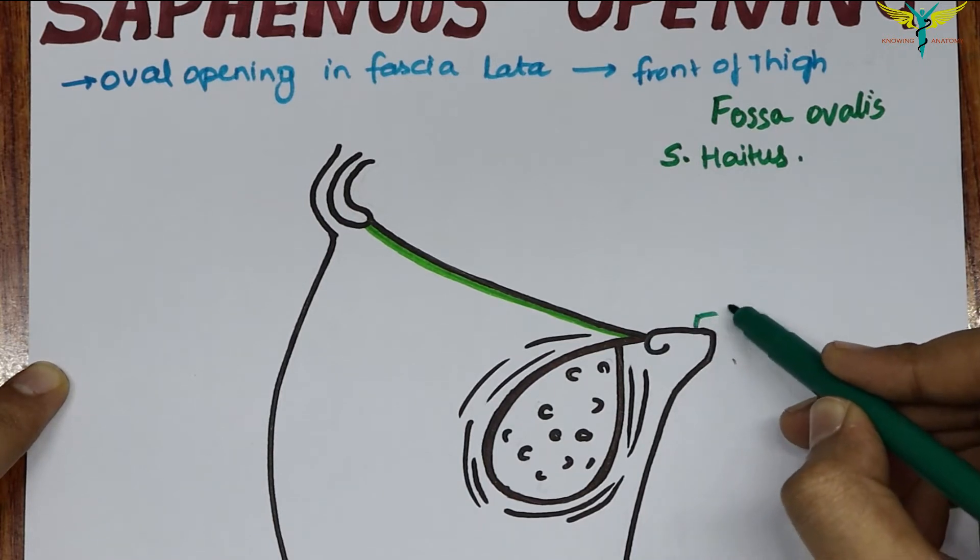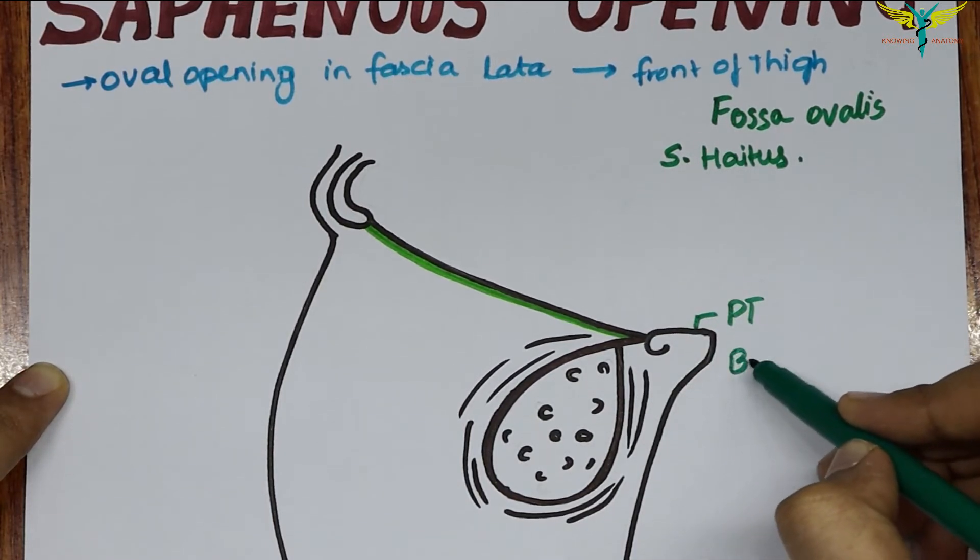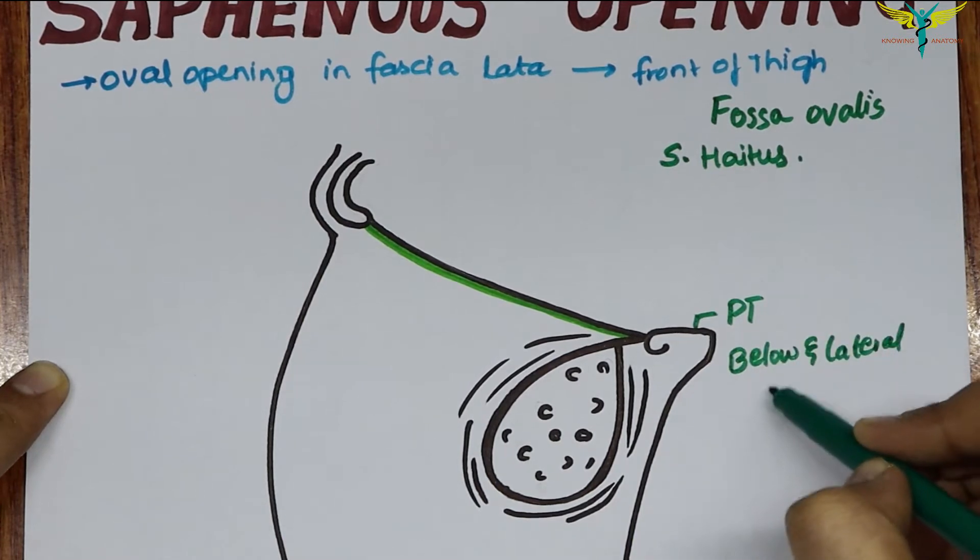So this is the pubic tubercle and it is below and lateral, that is 4 cm.